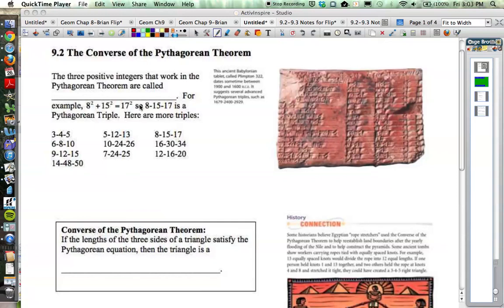Section 9.2 is called the Converse of the Pythagorean Theorem, and in a moment we'll review what a converse is. But first, let's take a look at what's in the first paragraph, where it says the three positive integers that work in the Pythagorean Theorem are called...